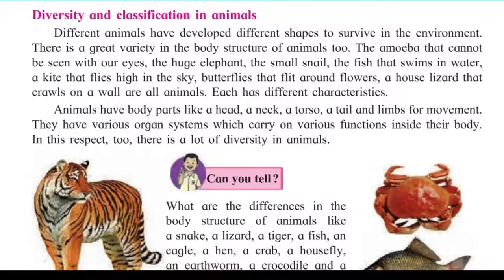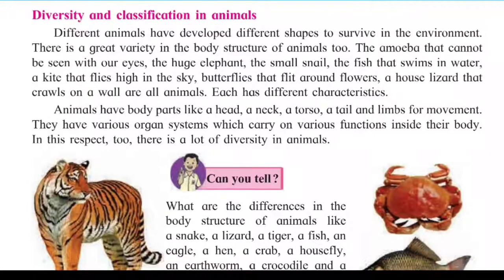The huge elephant, the small snail, the fish that swims in water, a kite that flies high in the sky, butterflies that flit around flowers, and the house lizard that crawls on a wall — these are all animals. Each has different characteristics.